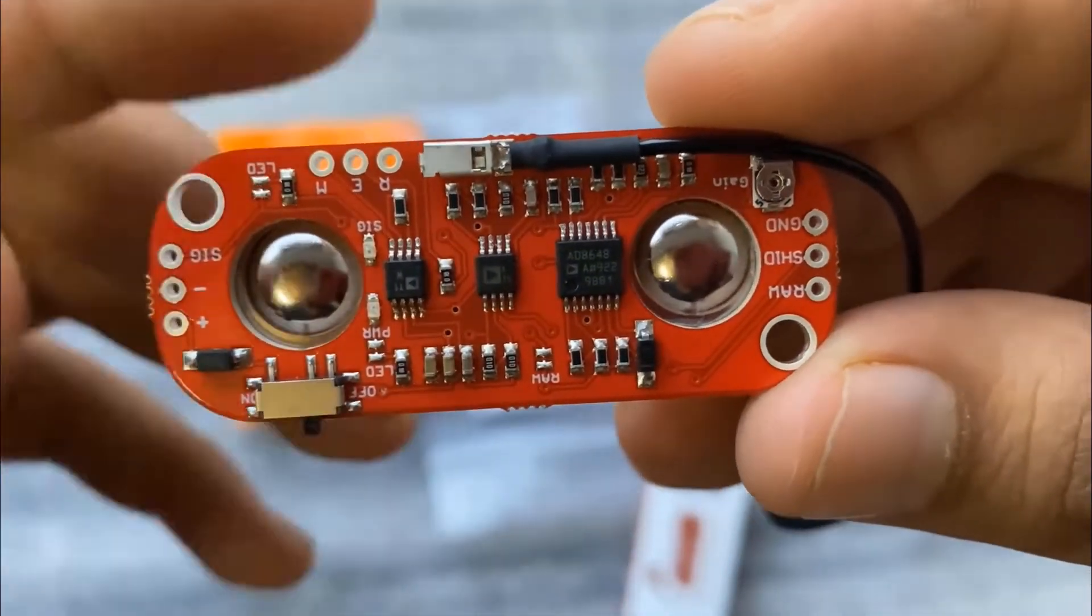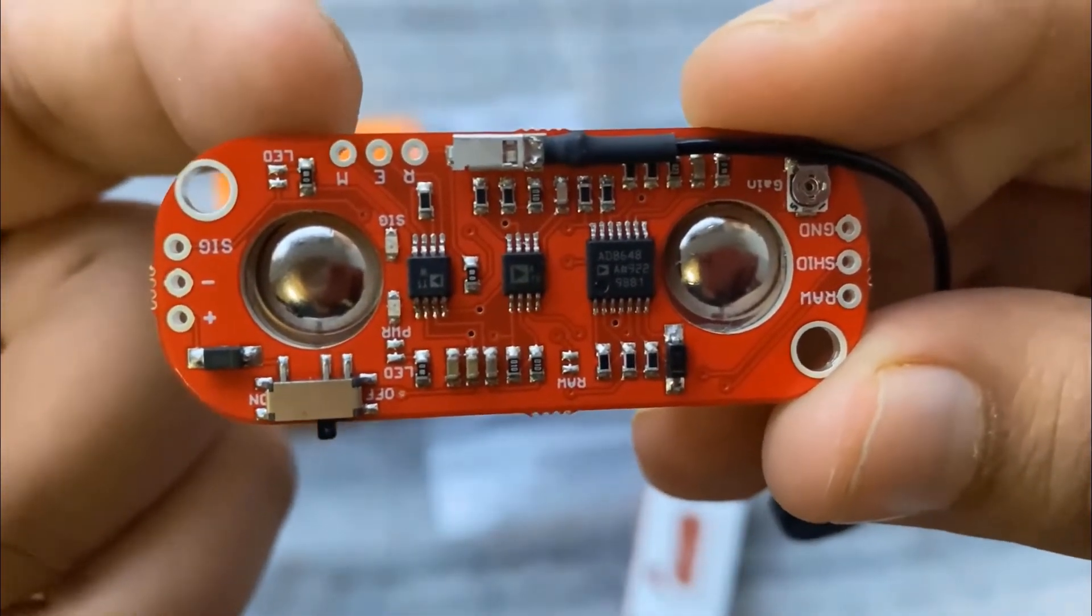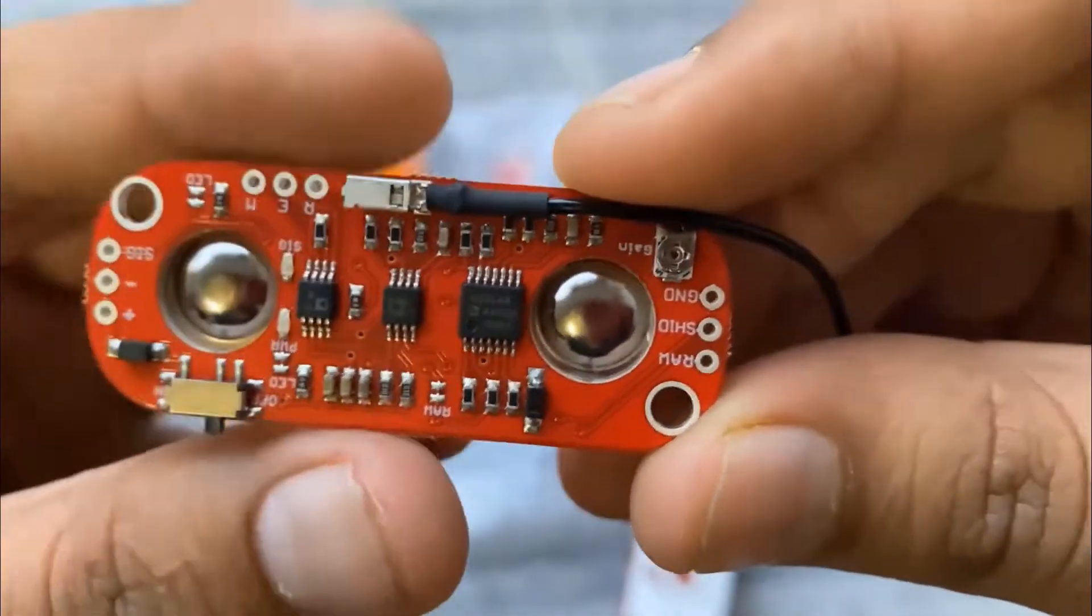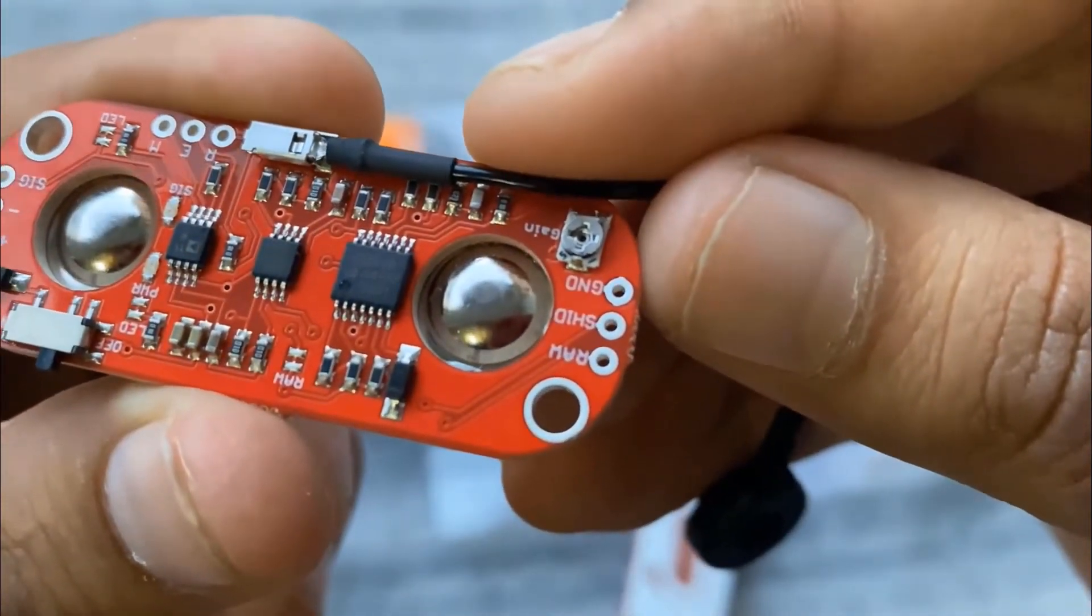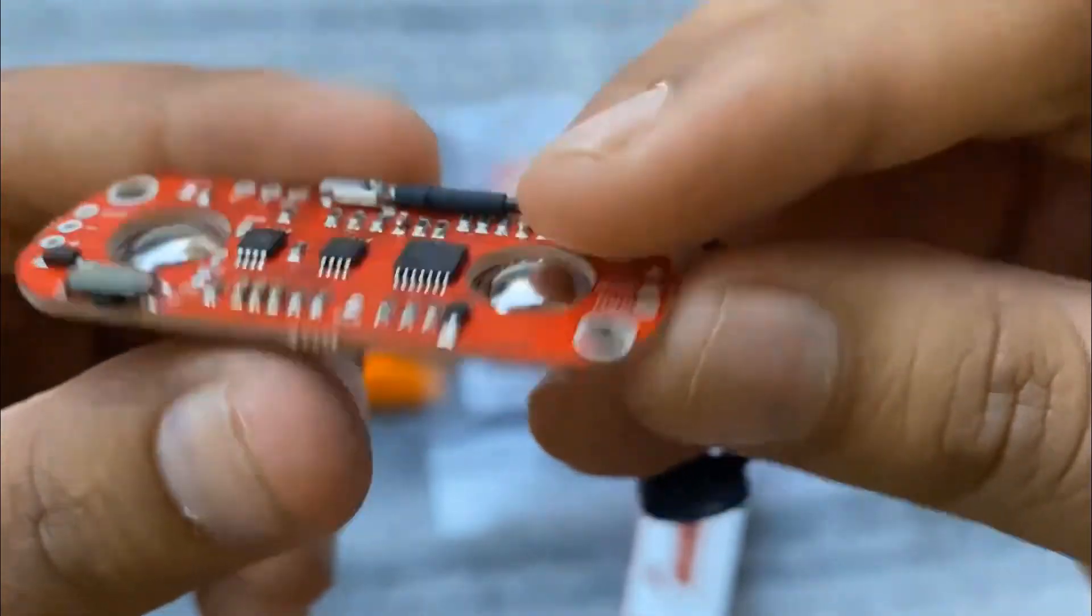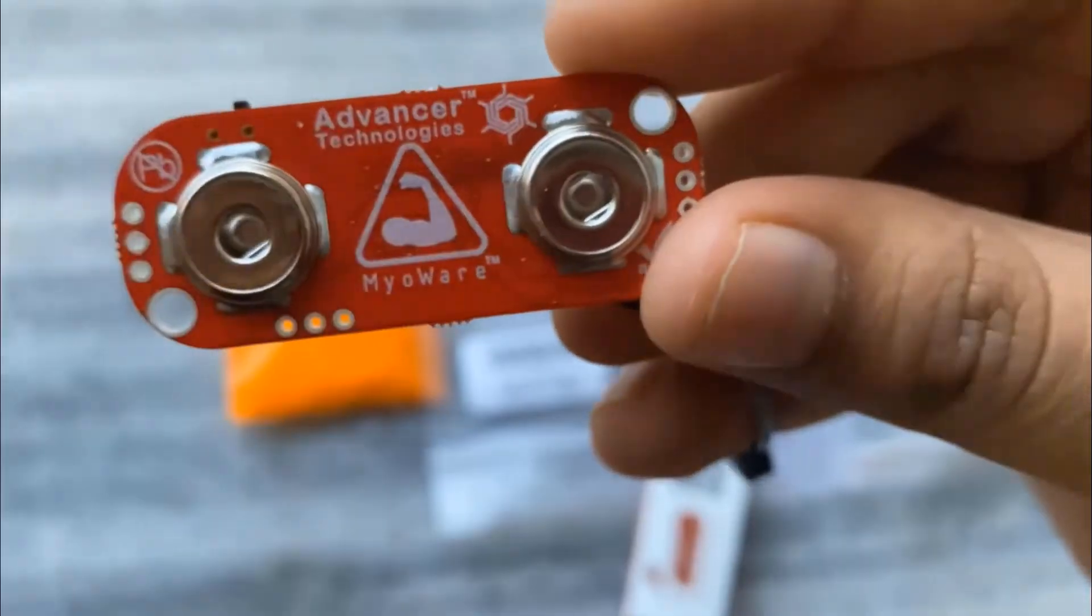You can see it has 9 pins as R, E, and M pins. On the right, it has signal, minus, and plus pins. On the left, it has ground, SHID or power pin, and raw pin which is also a signal pin. There is also a small potentiometer for controlling the gain.